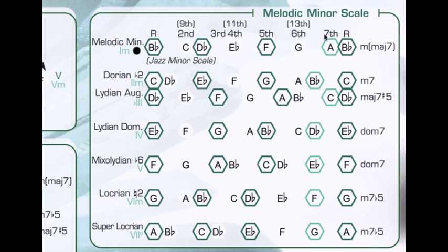At the very end of the scale we have the seventh degree and the root just a half step apart, which gives it a nice feeling that allows you to make a dominant chord out of this scale and resolve to your tonic.